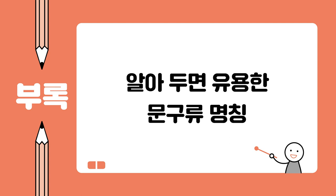Stationery vocabulary: paintbrush, protractor, pencil, paint, stapler, mechanical pencil, eraser, puncher, mechanical pencil lead, pencil case, calculator, ballpoint pen, pencil sharpener, sticky notes, fountain pen, correction tape, notebook, colored pencil, correction pen, paper clip, felt tip pen, glue, bulldog clip, gel pen, glue stick, cutter, marker, scissors, cutter blade, permanent marker, ruler, sticky tape, highlighter pen, compass, magnet.